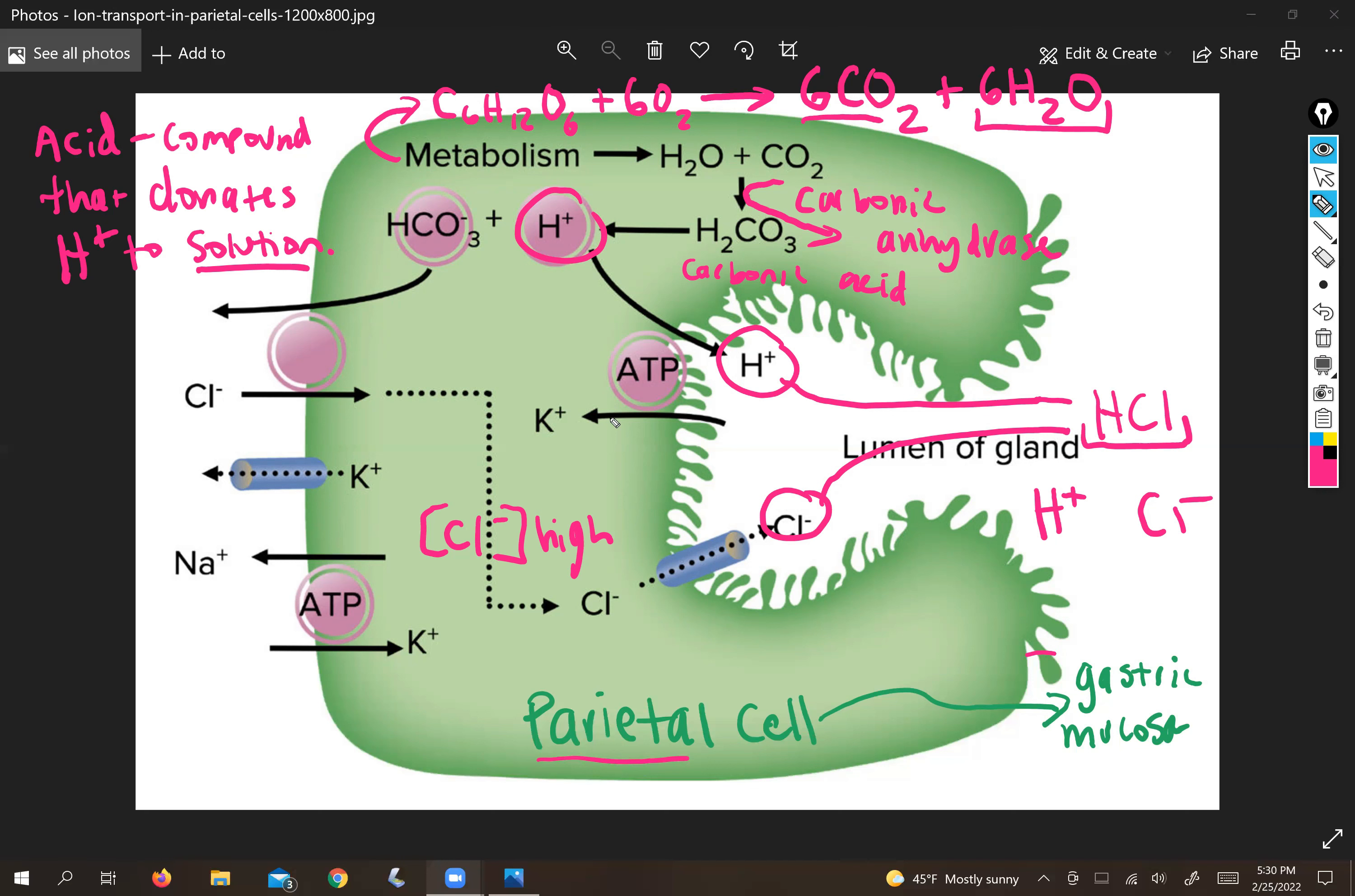So because the exchange with the proton requires that we trade one cation for another in an effort to do some balancing, that's going to create a scenario where there's a constant influx of potassium into the parietal cell as long as it's busy metabolizing.